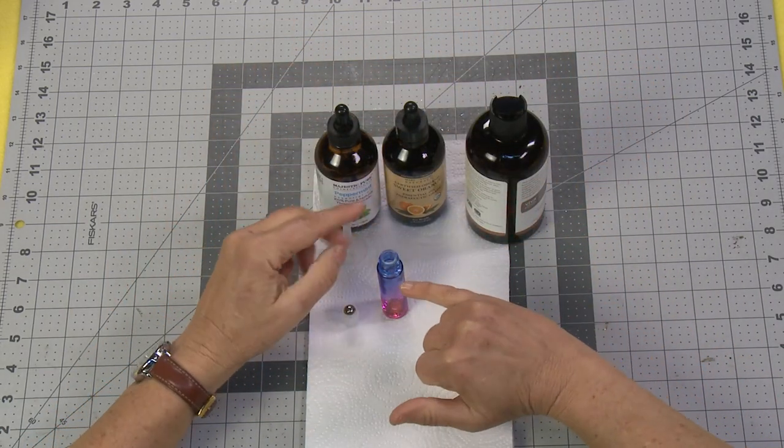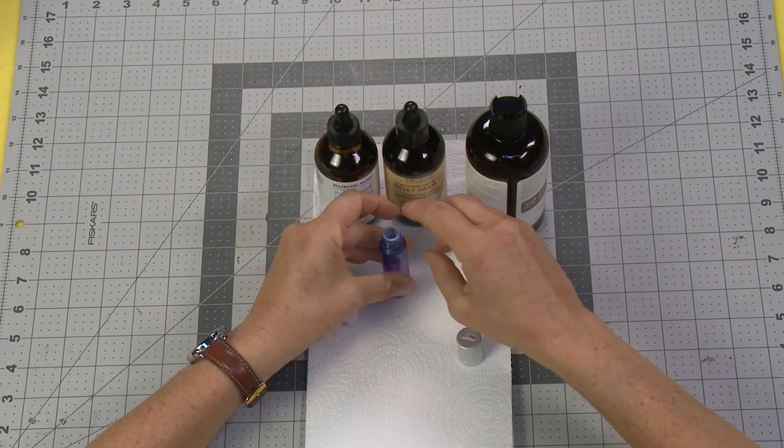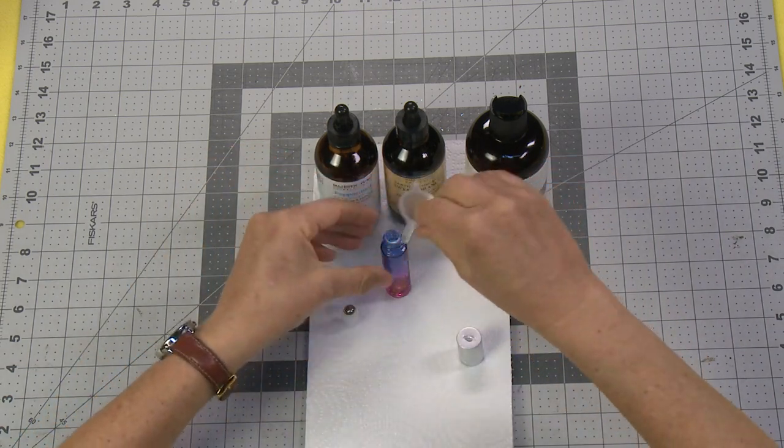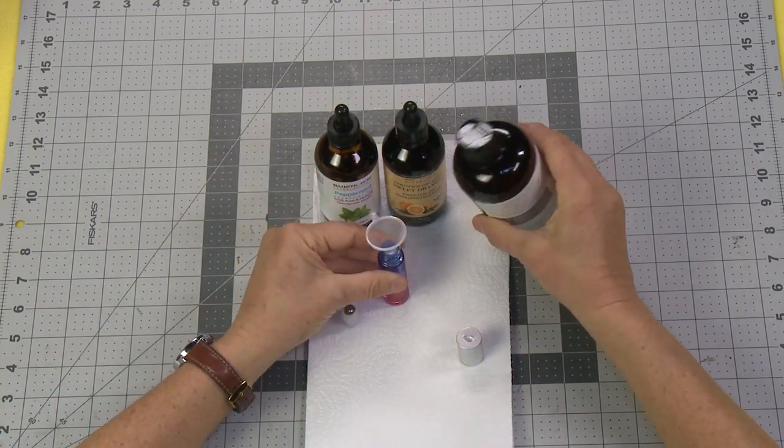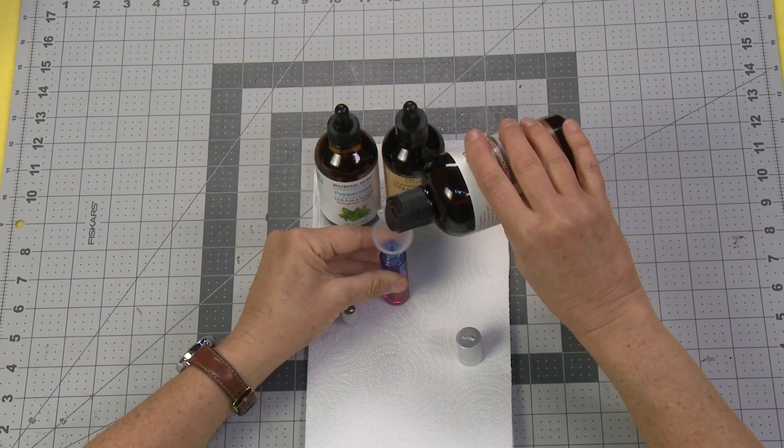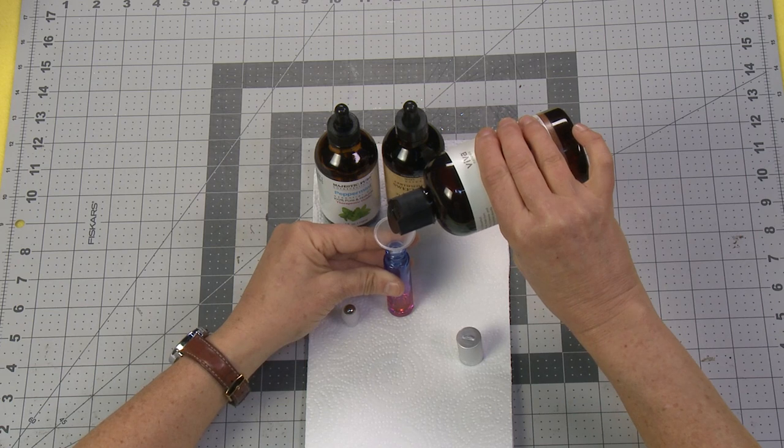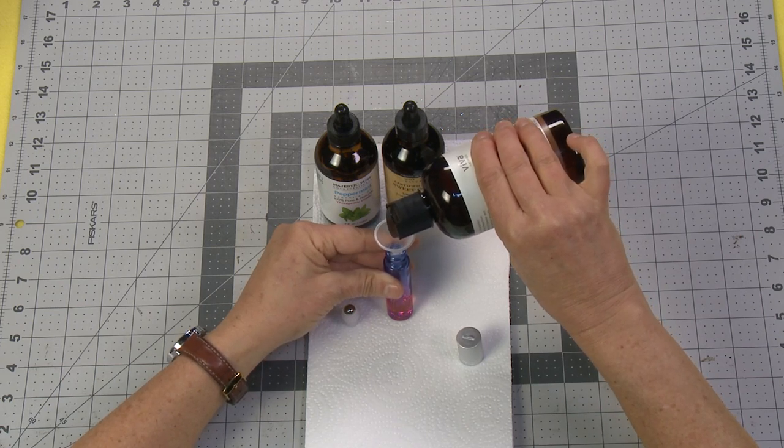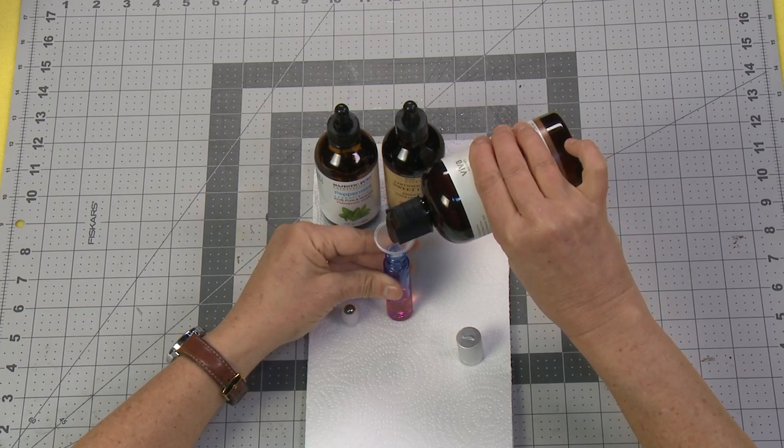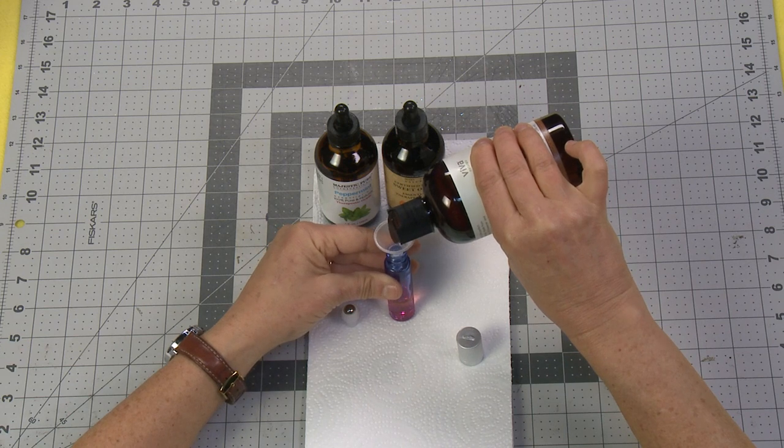And now we're going to just fill the bottle up to the top here with the carrier oil. Now there are lots of different kinds of carrier oils: there's almond, there's all kinds of different ones out there. This is coconut and I like the coconut because it's less greasy than some of the other ones.